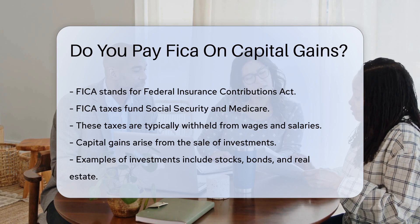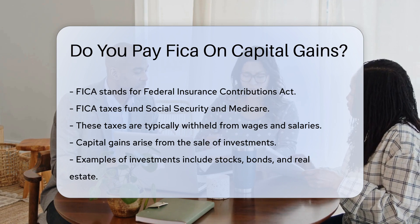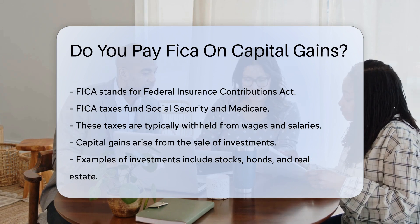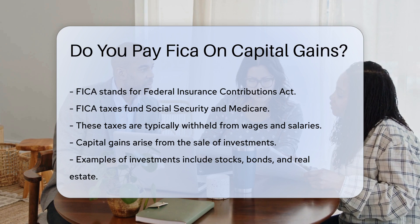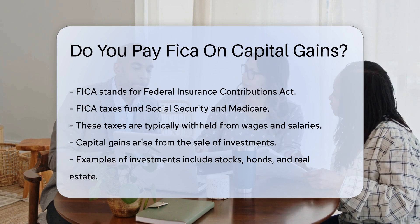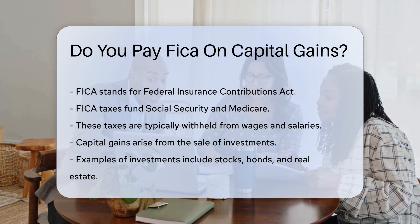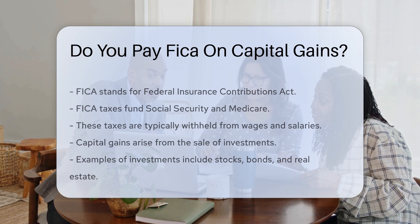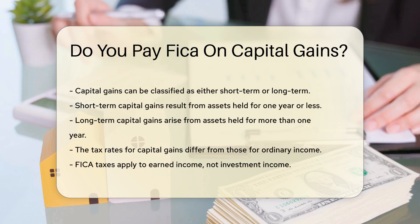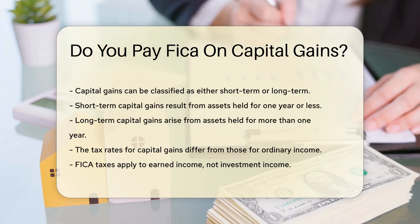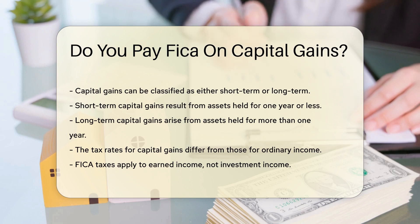Capital gains arise from the sale of investments. Examples of such investments include stocks, bonds, and real estate. Capital gains can be classified as either short-term or long-term. Short-term capital gains result from assets held for one year or less. Long-term capital gains arise from assets held for more than one year.